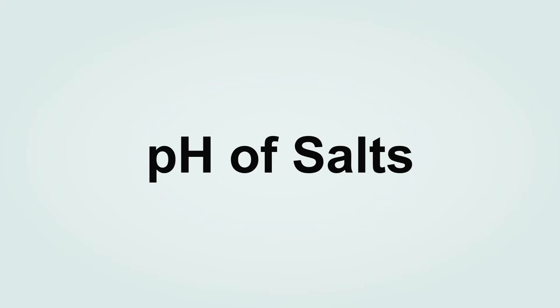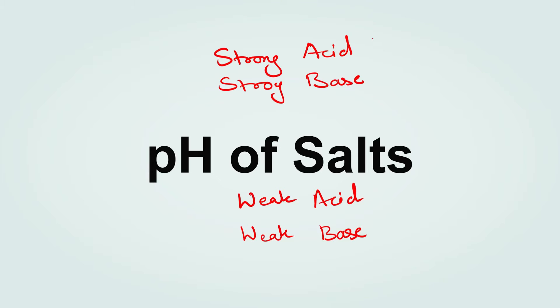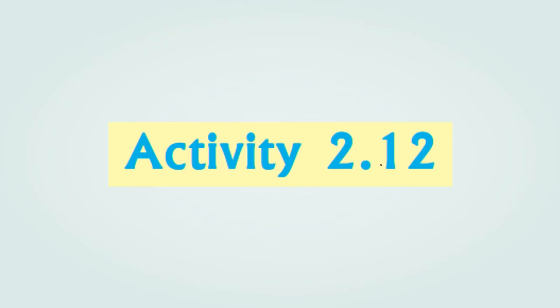Under 'More About Salt': in the previous video lecture we understood how we can differentiate acid and base by understanding its pH. The same applies to the pH of salt. Just as pH can tell us whether an acid or base is strong or weak, salt also comes under strong salt and weak salt. To understand the pH of salt, we will take help of Activity 2.12.